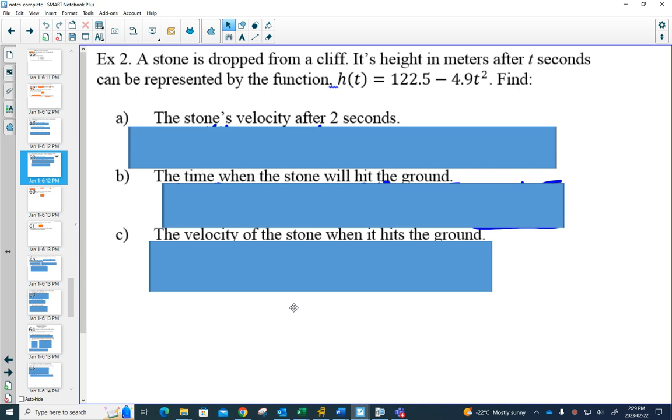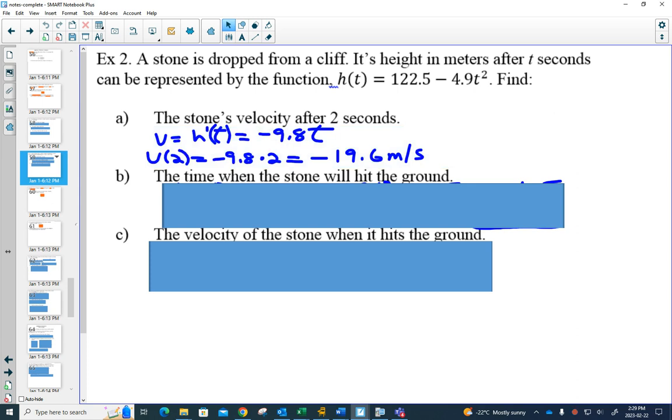We'll do this question first, and then I'll talk about interesting things about these questions. So what is its velocity after 2 seconds? If we take the derivative, we get a velocity formula. And what's interesting about the velocity formula here is it becomes negative 9.8t. What does that negative 9.8 remind you of? Gravity.